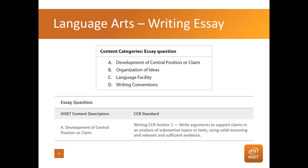Let's get started. The content category for the essay question works like this: each content descriptor has a CCR standard it's tied to. There are four of them: development of central position or claim, organization of ideas, language facility, and writing conventions. I guarantee you, the first time you read this, it might sound like noise — these are tough words, big words, which they call academic language in ESL and transitional programs. We need to break it down and make it accessible.